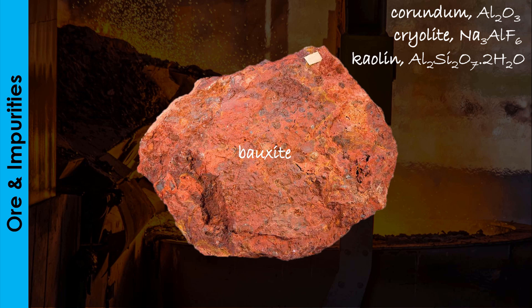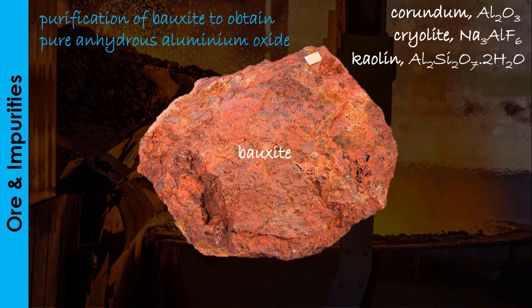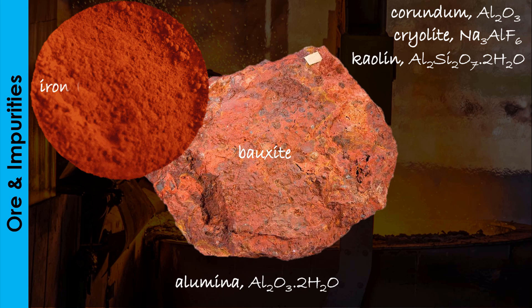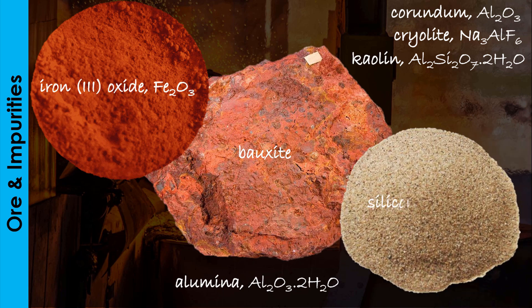The extraction of aluminum starts with the Bayer process, which is the purification of bauxite to obtain pure anhydrous aluminum oxide. Bauxite contains alumina or hydrated aluminum oxide as its main constituent, with iron (III) oxide and silicon (IV) oxide as the impurities. The iron (III) oxide is responsible for the brown color of the ore.